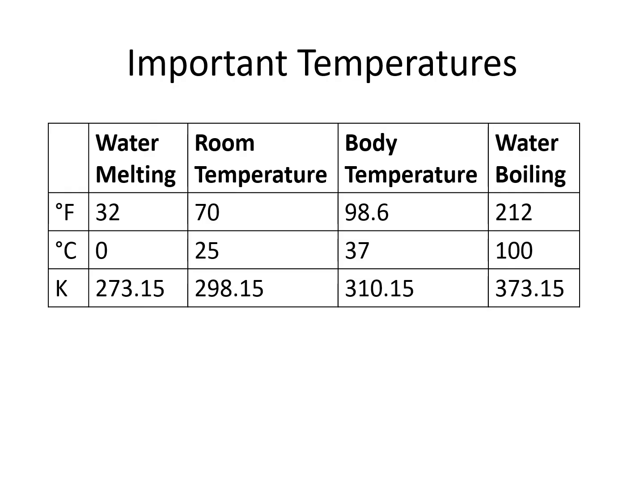If I were to give you a temperature like 31 degrees Celsius, you would know it is somewhere between room temperature and body temperature, so you would know it is somewhere between 70 and 98.6 Fahrenheit.